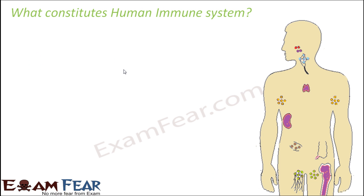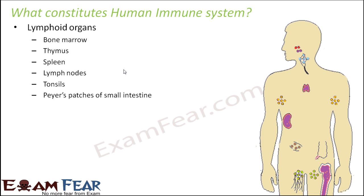The various organs which constitute the human immune system are together known as the lymphoid organs. They are called lymphoid organs because the immune response is given in the form of antibodies, and it is the lymphocytes that produce antibodies. Lymphocytes play the most important role in the human immune system. The organs where these lymphocytes originate, differentiate, proliferate, and become mature are known as lymphoid organs.